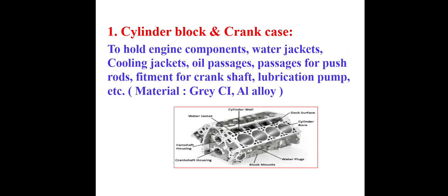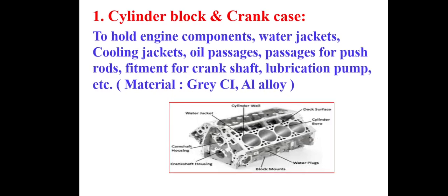Component number one is the cylinder block and crankcase. As shown in the figure, cylinder blocks are made by casting. The material used is gray cast iron and aluminum alloy. The cylinder block is used to hold the engine components — water jackets, cooling jackets, oil passages, passages for push rod, fitment for crankshaft, lubrication pump, etc. These are made by the casting process.